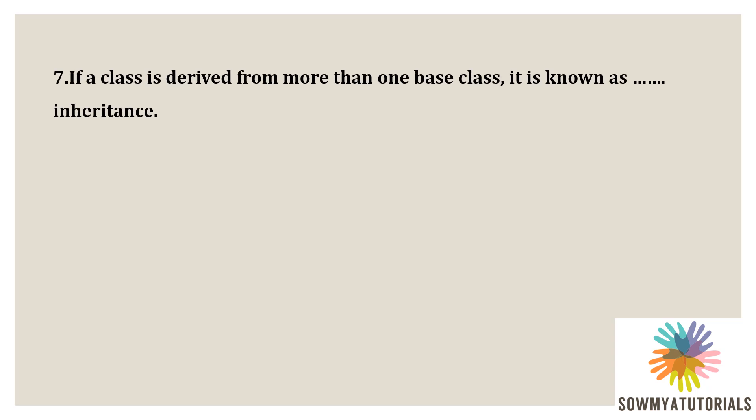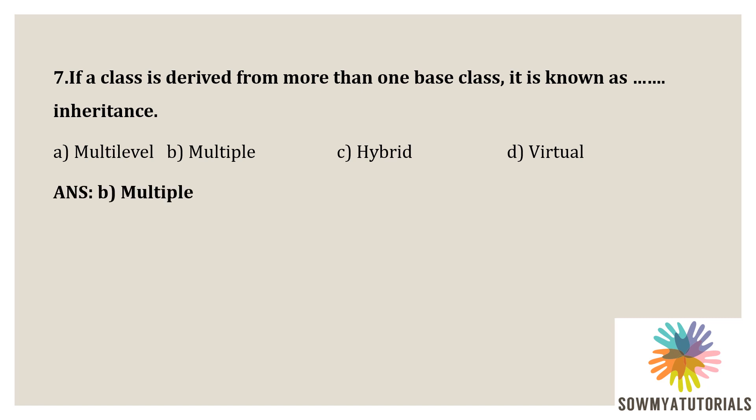Next question: if a class is derived from more than one base class, it is called what? Options are option A: multi-level, option B: multiple, option C: hybrid, option D: virtual. The correct answer is multiple inheritance, which means it has more than one base class deriving only one derived class. If a class is derived from more than one base class, it is called multiple inheritance.